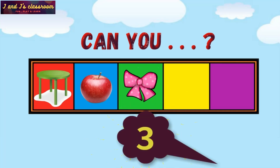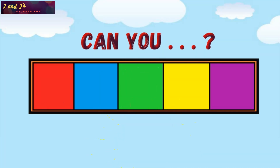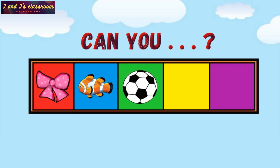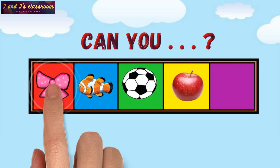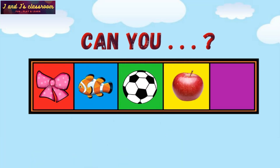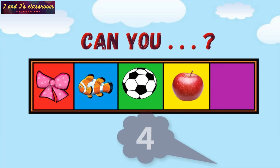Good. Now can you identify how many objects are in the 5 frame? 1, 2, 3, 4. 4.